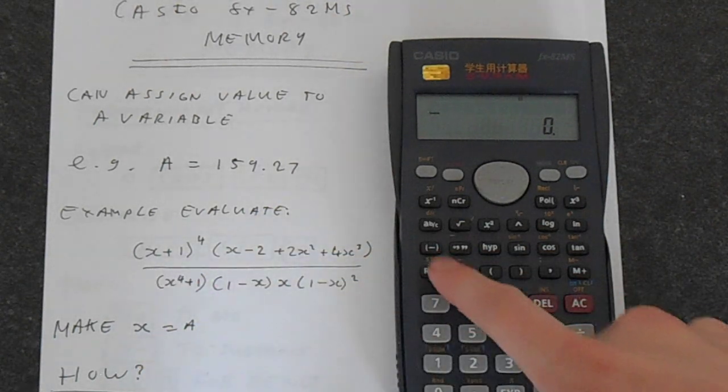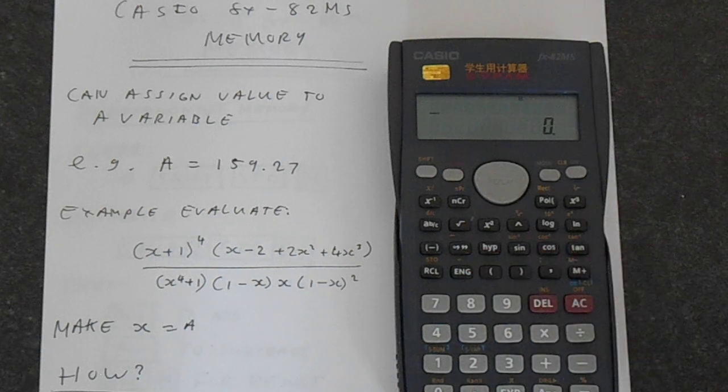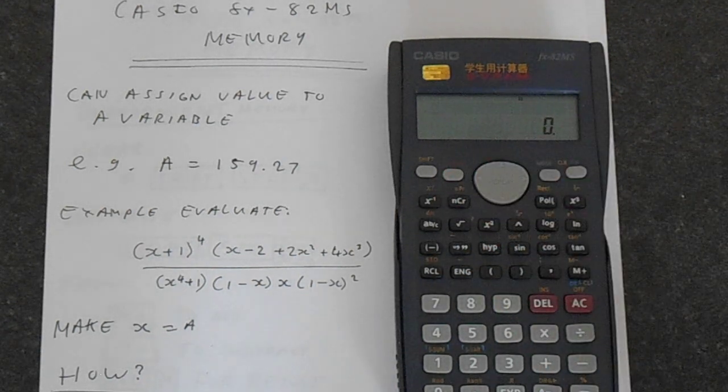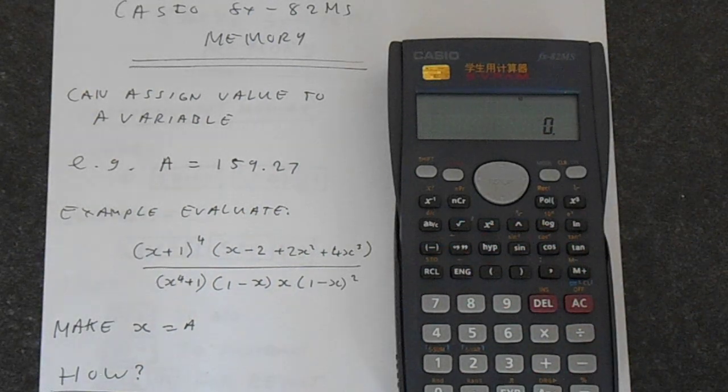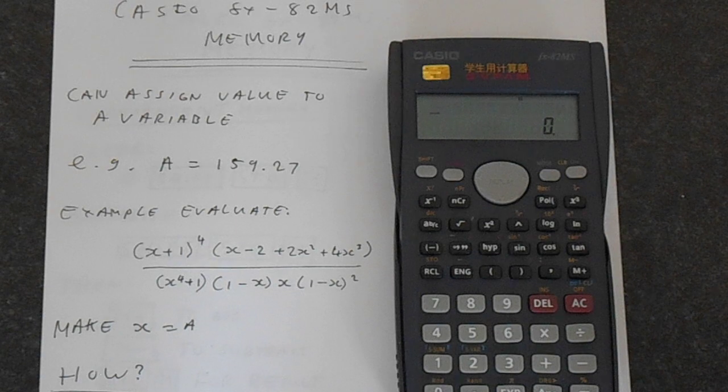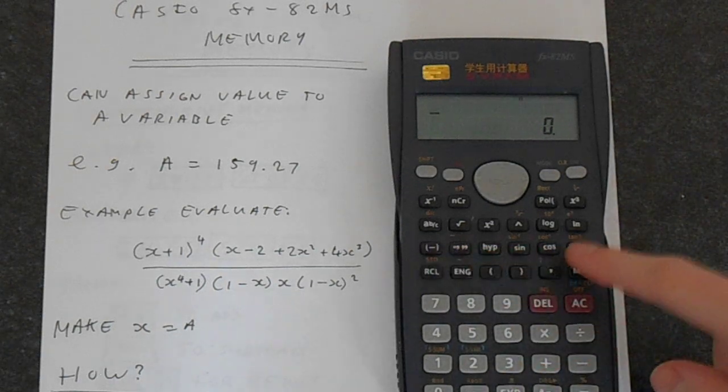You'll notice on this calculator you've got all these variables in red that you can access using the alpha key. You can make any of these variables have some value, 10 or whatever. You can save numbers to these variables.